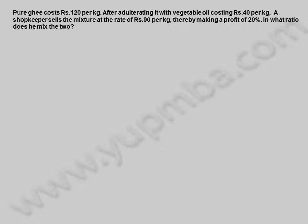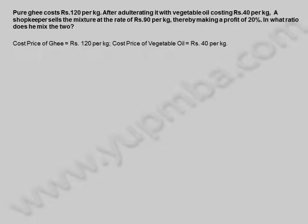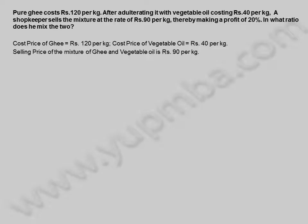Pure ghee costs 120 rupees per kilogram. After adulterating it with vegetable oil costing 40 rupees per kilogram, a shopkeeper sells the mixture at the rate of 90 rupees per kilogram, thereby making a profit of 20 percent. In what ratio does he mix the two? Cost price of ghee = 120 rupees/kg, cost price of vegetable oil = 40 rupees/kg, selling price of mixture = 90 rupees/kg, profit = 20%.